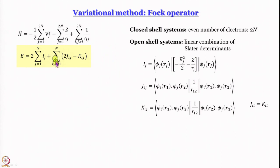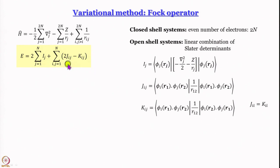For helium specifically: first you write I₁ + I₂, but I₁ and I₂ are one and the same. Then for the exchange/Coulomb part you write K_{ij} = J_{ij} where i = j = 1, giving 2J₁₁ − J₁₁ = J₁₁. Substituting, you get the expression for the energy of helium.